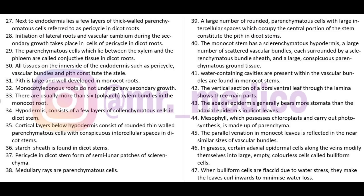Starch sheath is found in dicot stem. Pericycle in the dicot stem forms semi-lunar patches of sclerenchyma. In dicot stem, the pith consists of a large number of round parenchyma cells with large intercellular spaces, occupying the central portion of the stem.